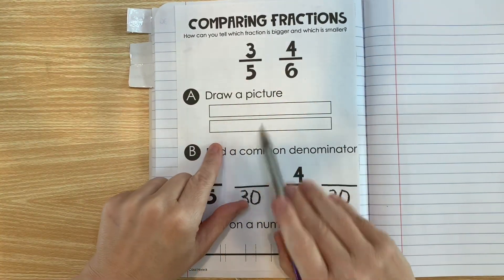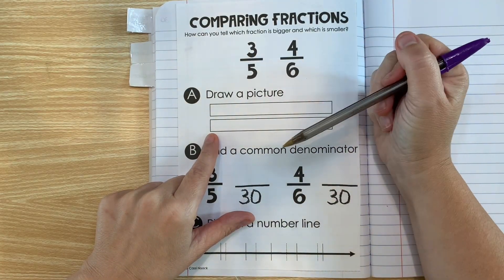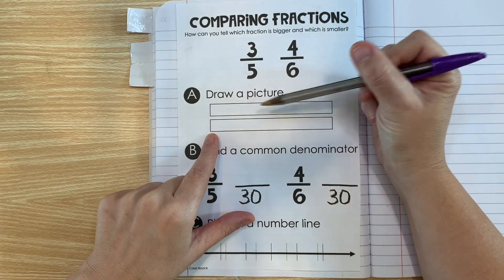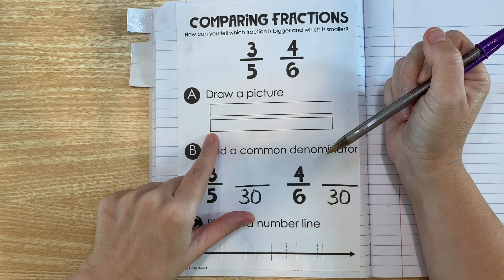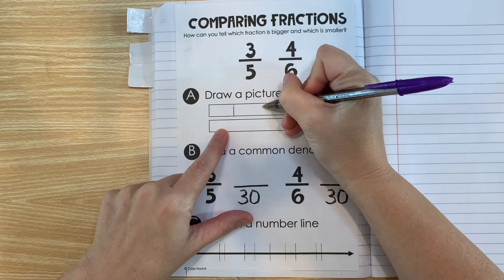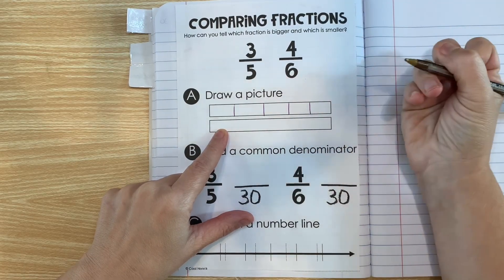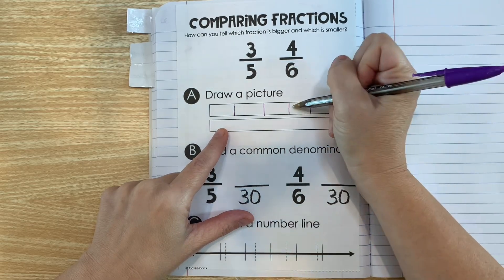In the directions on part A, it says represent the fractions on the models and use your models to compare the fractions. So we're going to represent three-fifths and four-sixths here. The first thing is to do three-fifths. That means we need to break this number line into five equal parts.